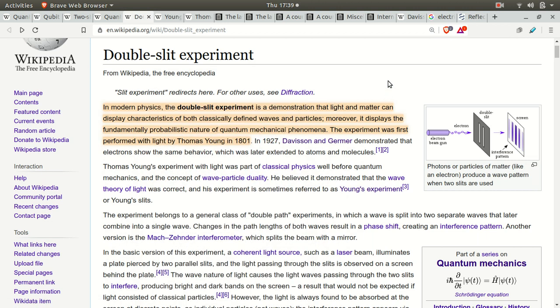The double-slit experiment is a demonstration that light and matter can display characteristics of both classically defined waves and particles simultaneously. Moreover, it displays the probabilistic nature of quantum mechanics. The experiment was first carried out by Thomas Young in 1801, and then later on by Davison and Germer. They're going to show that electrons show the same thing as light. So here's what this scientific cult that we live in is trying to get us to believe. They're trying to do this little sleight of hand trick here, where they're saying light is both a particle and a wave at the same time.